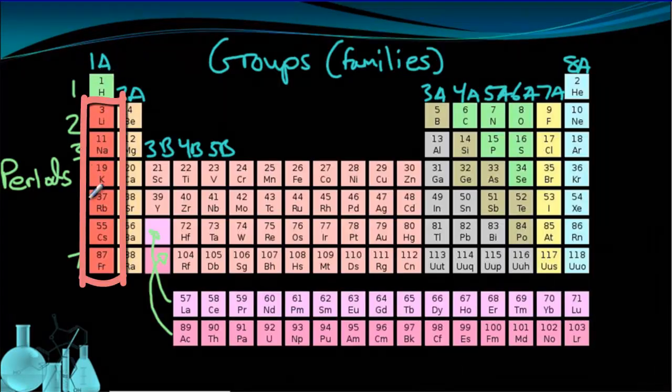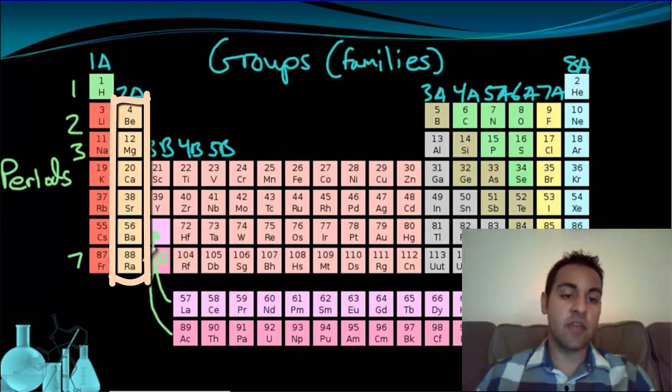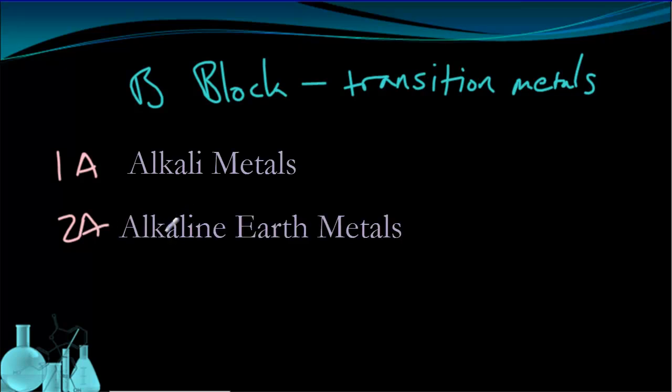So we have the first group all the way on the left. That's the 1A group. 1A elements are referred to as alkali metals. The next group, the 2A group, these are called alkaline earth metals.